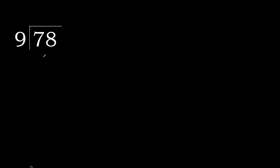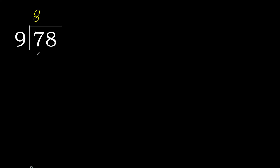78 divided by 9. 7 is less, therefore next. 78 is not less, therefore with 78. 9 multiplied by which number is nearest to 78, but not greater. 9 multiplied by 9 is greater, multiply by 8. 72 is not greater.